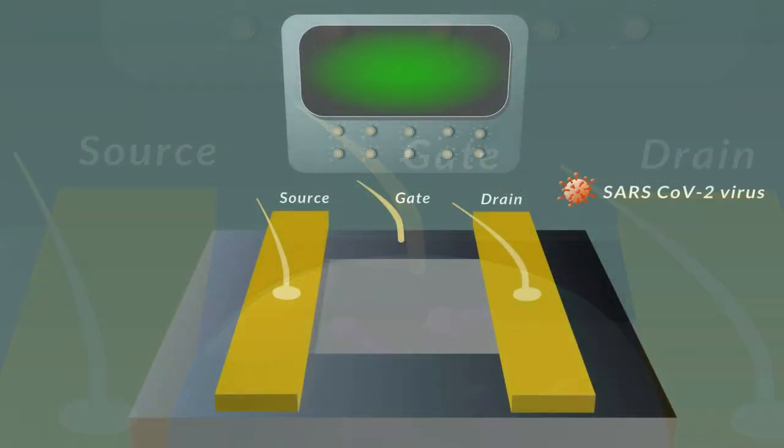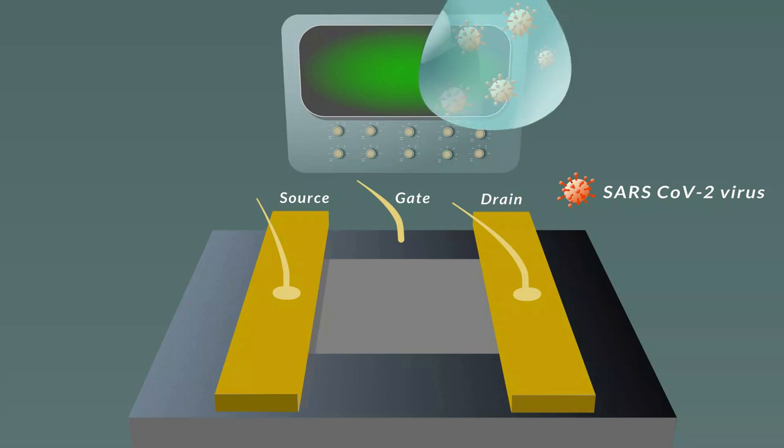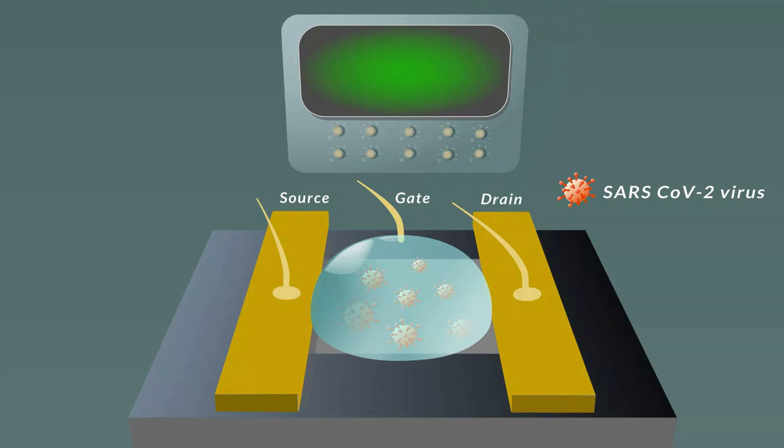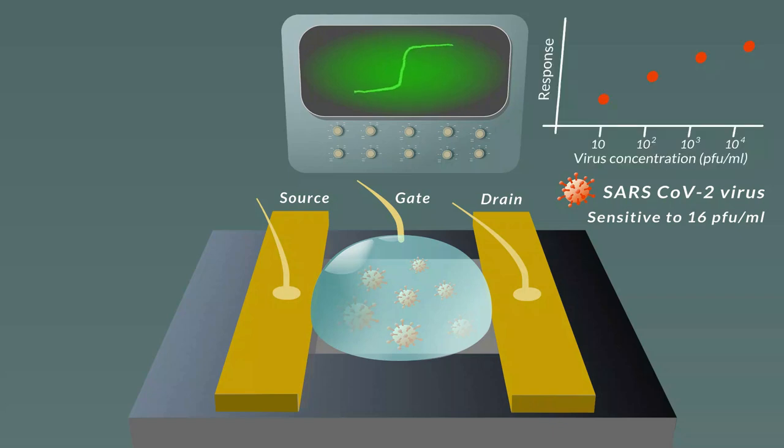Then, they established that the sensor could detect the whole virus. Their GFET sensor detected concentrations as low as 16 PFU per milliliter. A PFU is a unit defining the number of virus particles. They also showed that addition of higher concentrations of virus gave a linear increase in response.